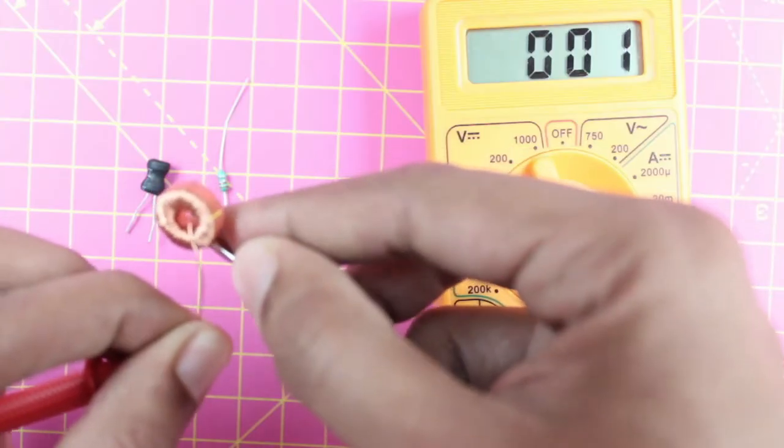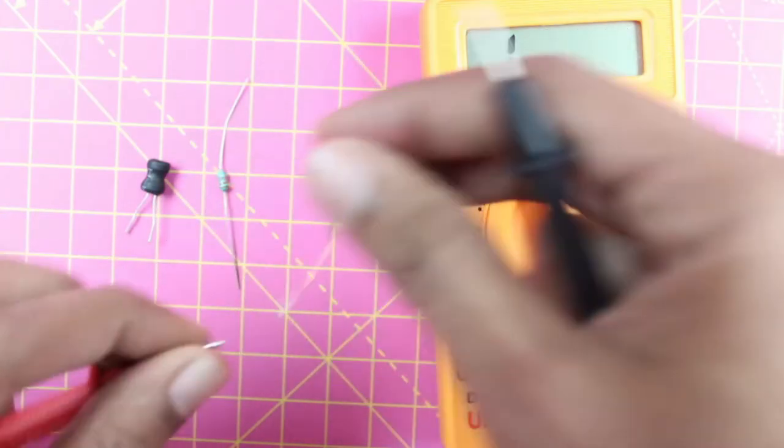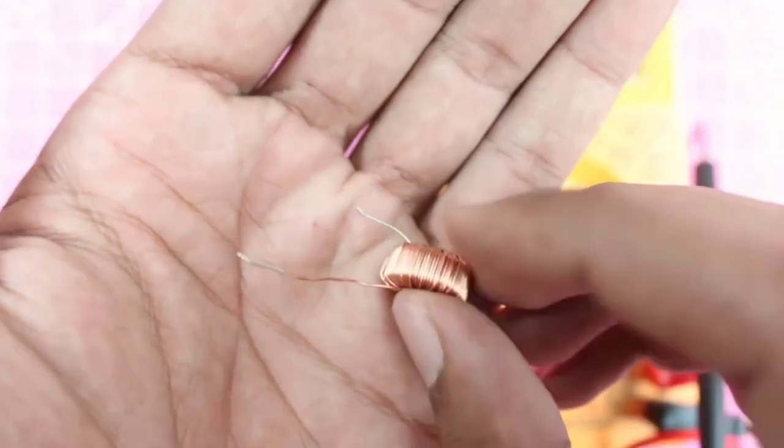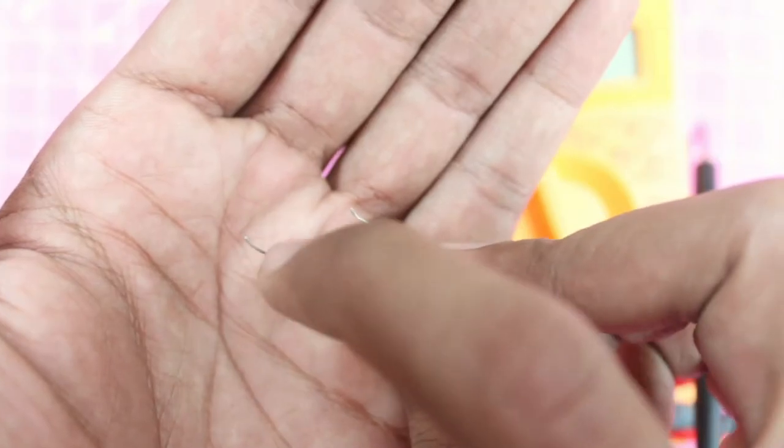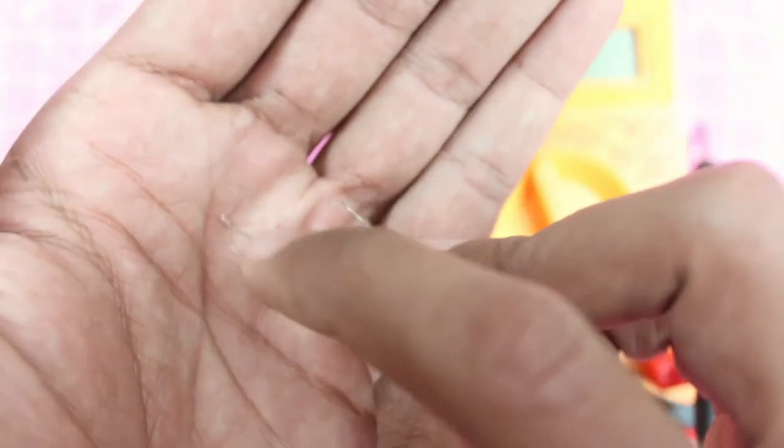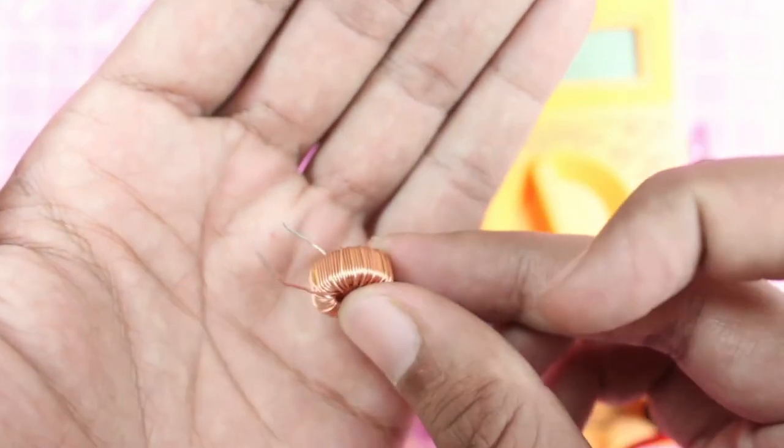Another thing you have to notice is the inductor leads should be exposed. They might have some enamel coating on top, especially for toroidal inductors. Make sure you remove it with your clipper or something.